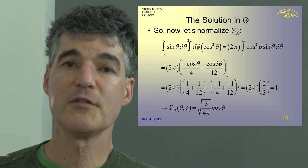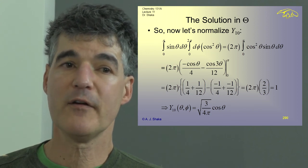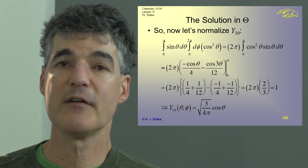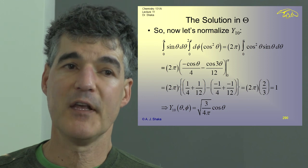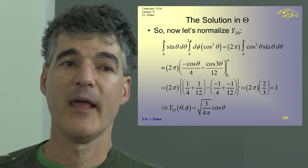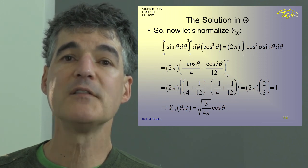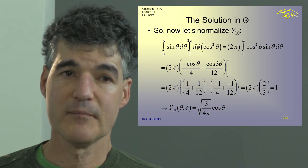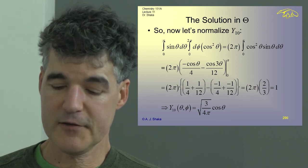That's our final solution for another energy eigenfunction we hadn't seen, and we call it Y(1,0), because L is 1 for this.